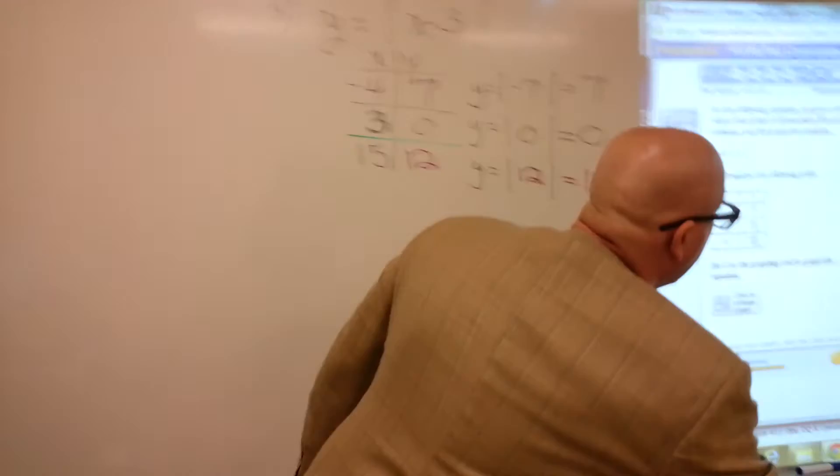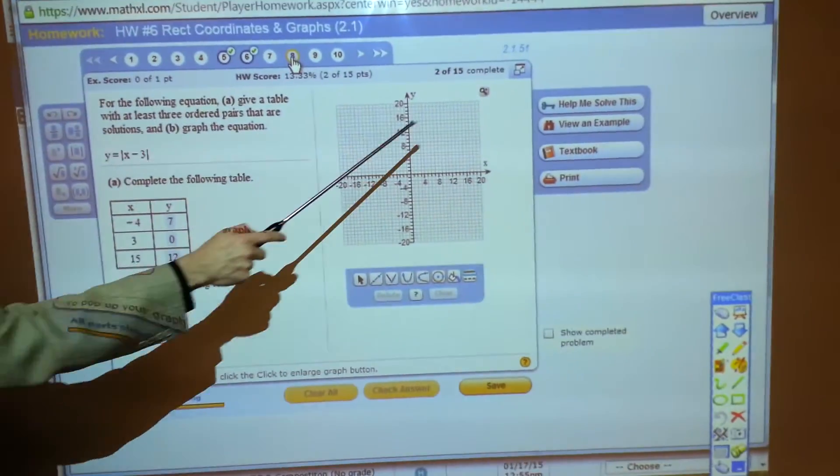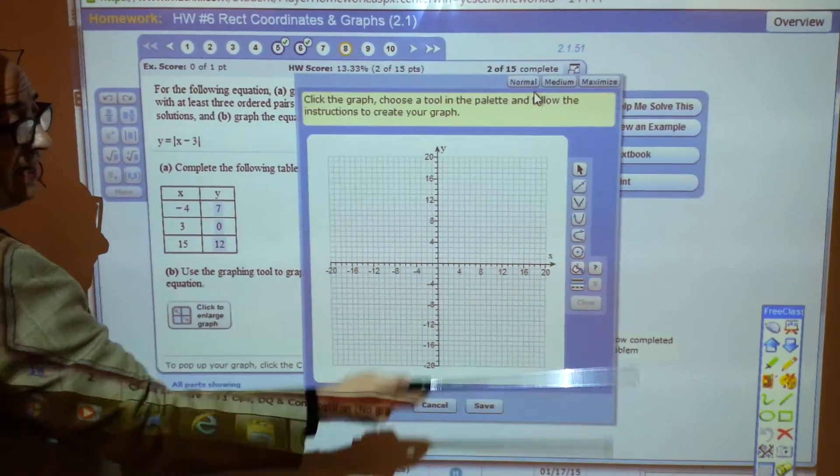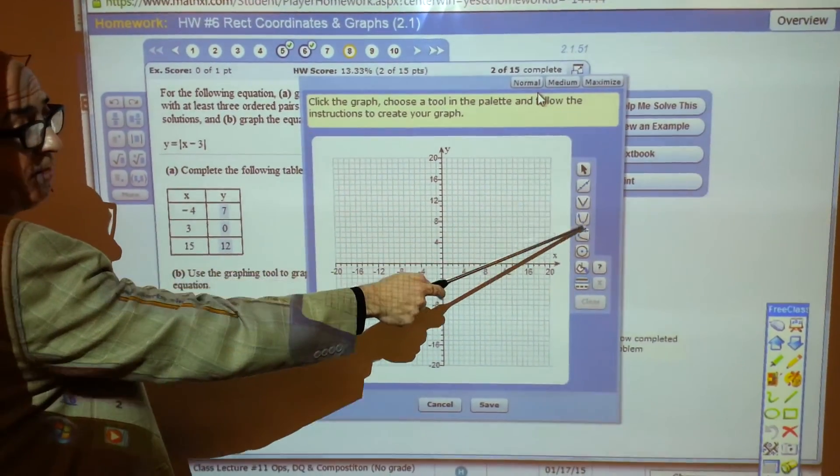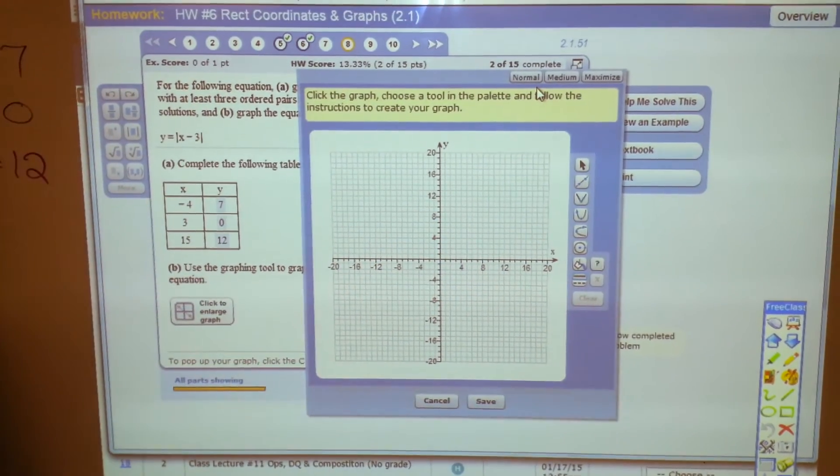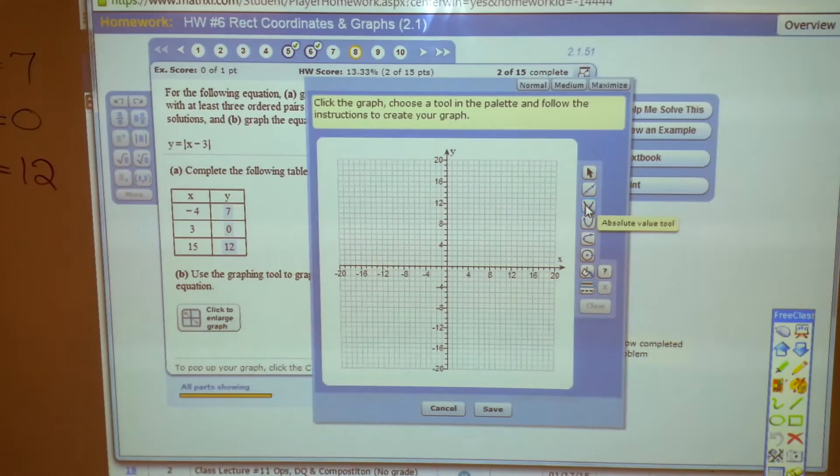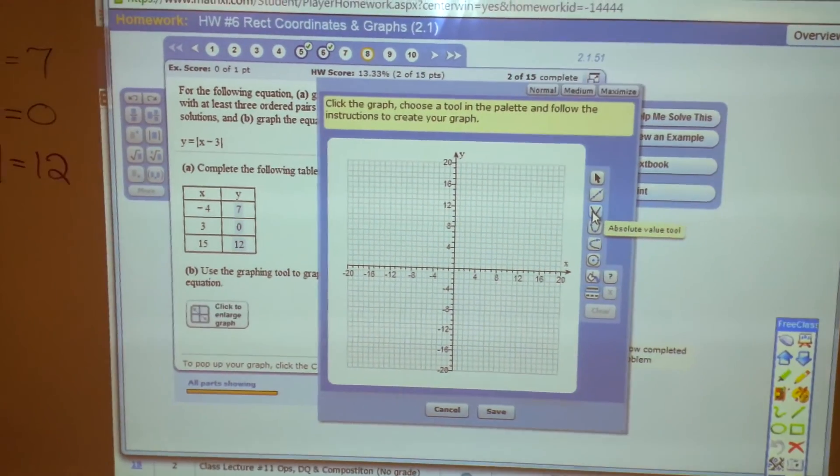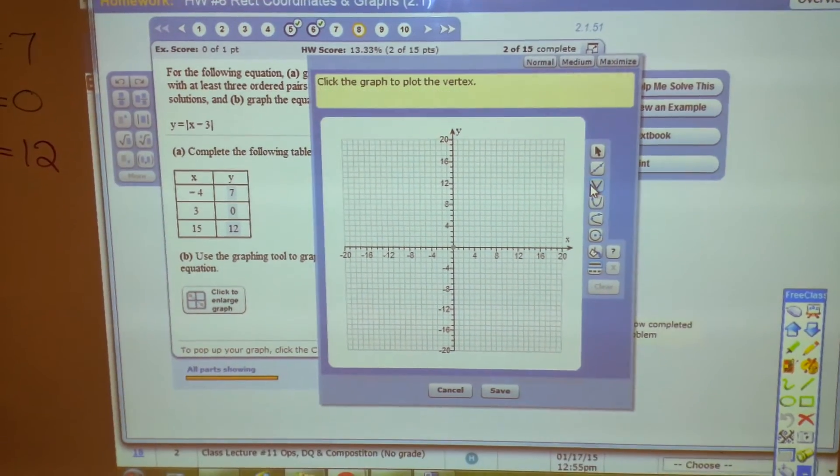Now we're going to graph. So what I'm trying to do here is illustrate this graphing tool. If you hover your mouse along there, you'll see the different names. Line tool, absolute value tool. It can't be much more obvious which tool to use. This one has absolute values.